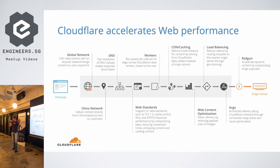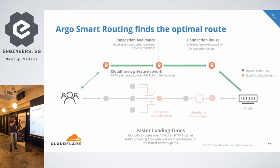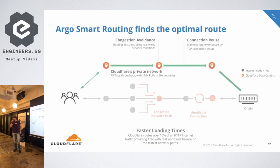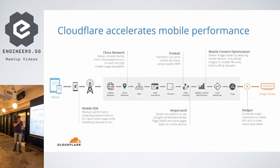Any questions at this point? Shall we leave them for the end? Okay. I'm going to go fast since we already talked about Argo. Basically what Argo does is send the request while trying to avoid congestion on the network. We have several points of presence, so it calculates latency among all the hops ahead and figures out in a smart way how to get fastest to the origin.